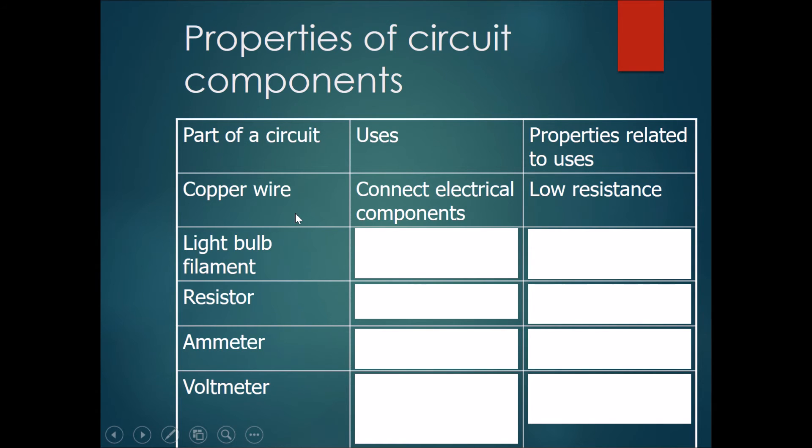So let's talk about the properties of some circuit components. For example, a copper wire is used in most electrical wiring. The use of copper wire is to connect electrical components together. The properties that make it useful is that it has low resistance. If you can, please pause the video here and complete the rest by yourself.